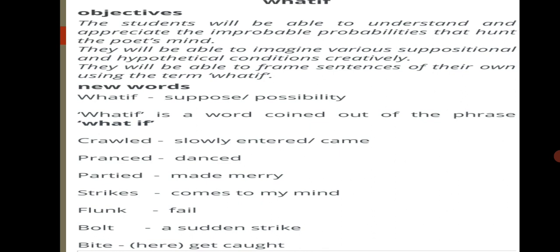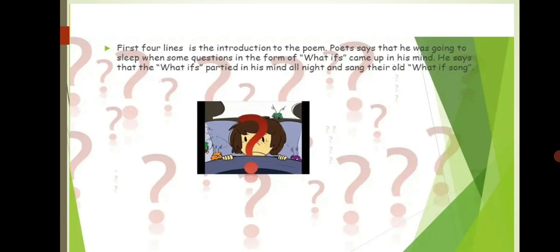Now, the first four lines are the introduction to the poem. In the first four lines, the poet says that he was going to sleep when some questions in the form of 'what ifs' came up in his mind. He says that the what ifs partied in his mind all night and sang their old song. So the child is trying to sleep but is not able to sleep, and that's why many hypothetical situations are arising in his mind. He is very nicely using the language that the what ifs partied in his mind, means they had danced and had fun in his mind the whole night. While having fun, the what ifs, the worries, they sang their song, what if song.